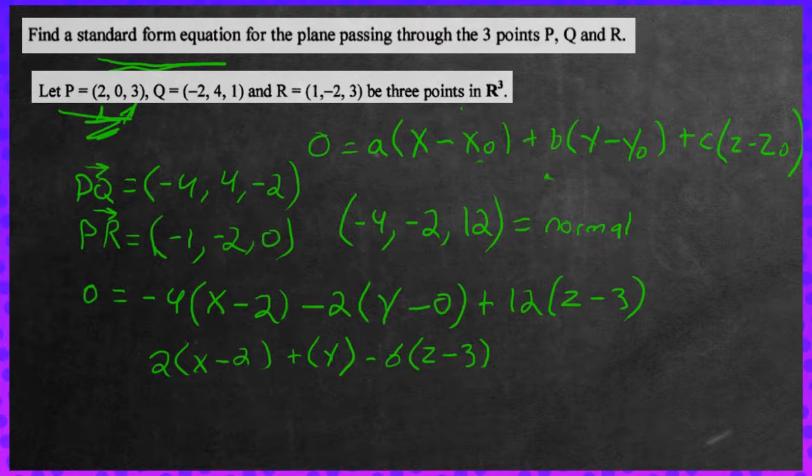And let's put the equal sign to the right over here now. Just for simplicity's sake. Now let's multiply it through, because it wants the equation not in just plain form, but in standard form for the actual equation of the plane. So let's multiply it through. We get 2X minus 4 plus Y minus 6Z, then positive 18.